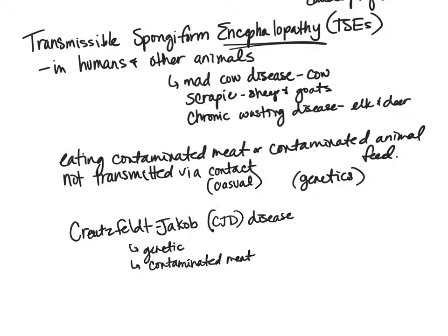We also see this with scrapie — if a sheep or goat was behaving erratically, it would be identified as scrapie and the animal would be killed without using its meat. With chronic wasting disease, hunters who bring home elk or deer and process the meat themselves could be exposed to prions, which can then go to the brain and cause TSE in the human, eventually causing death.